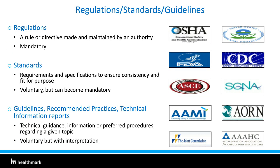Where do standards and guidelines come from? There are mandatory regulations as well as voluntary standards and guidelines. In the U.S., we're legally obligated to follow OSHA and EPA. When it comes to FDA and CDC, we'd be hard pressed to justify not following their guidance. Then we have standards and guidelines from professional societies like ASGE, SGNA, AAMI, and AORN. Accreditation and surveying agencies like Joint Commission and AAAHC use all of the above as reference points. Depending on your services provided, you may have oversight from other organizations like the American Association for Accreditation of Ambulatory Surgery Facilities or the Accreditation Commission for Healthcare.